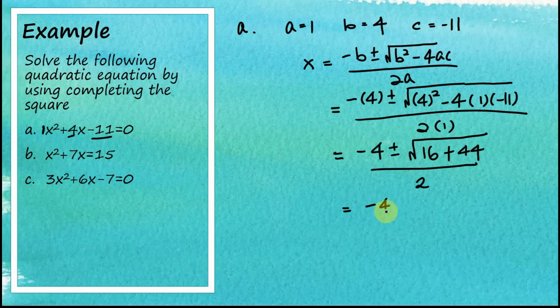Now if you want, you can split them here. So this is negative 4 over 2, plus minus square root of 16 plus 44, which equals 60, divided by 2. So this becomes negative 2.